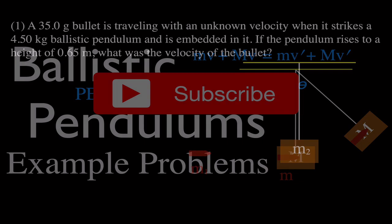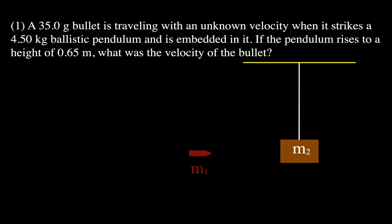I also made a video previously with an explanation of how the ballistic pendulum works, and you can link to that video in the upper right-hand corner. We're going to go over three different problems, and the first example we have is a 35-gram bullet traveling with an unknown velocity. The ballistic pendulum is often used to determine the velocity of a bullet just before it strikes the pendulum.